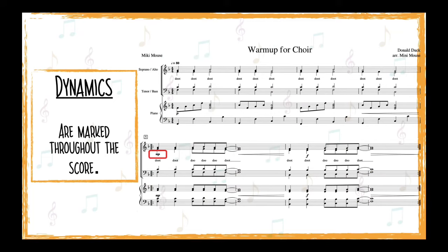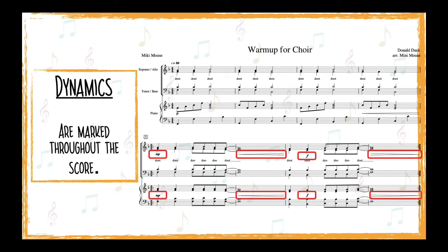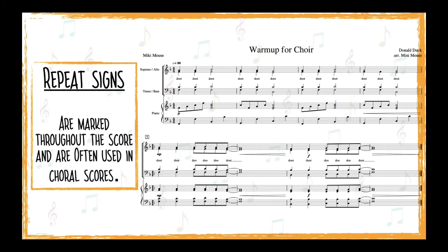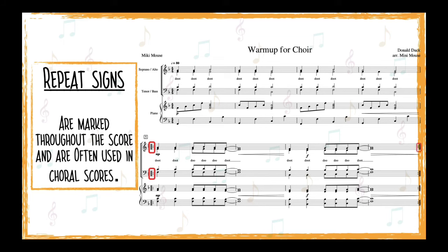Dynamics are marked throughout the score and refer to the volume of the music. They help us create more interesting, dramatic music, and when we see a dynamic marking, we should always follow it. Repeat signs are also marked throughout the choral score and are very common in octavos. There are a number of different repeat signs that are important to understand in order to follow the score, such as first and second ending, coda, segno, and others.